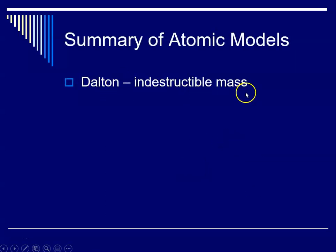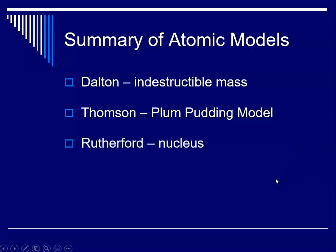Remember Dalton, his atomic theory suggested that atoms are indestructible and Thomson discovered the electron and put forth the plum pudding model. Rutherford discovered the nucleus and Bohr explained the hydrogen atomic emission spectrum with a solar system model of the atom.